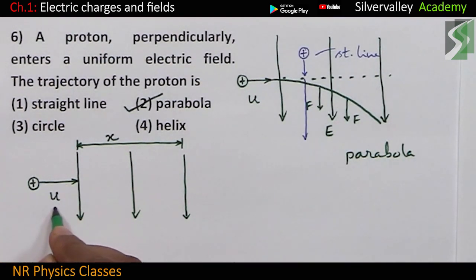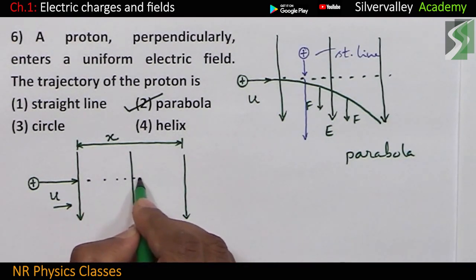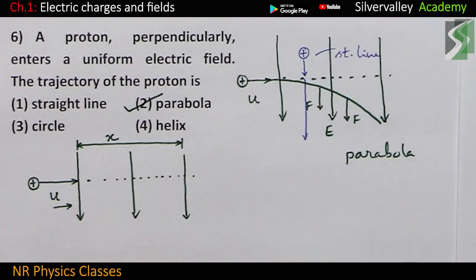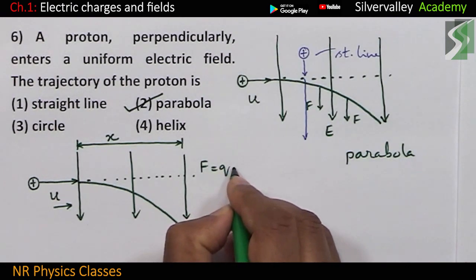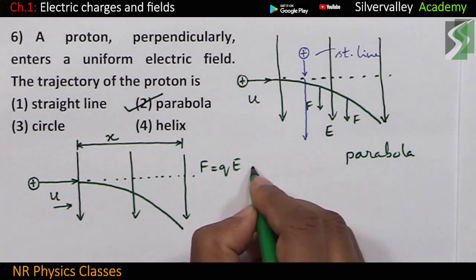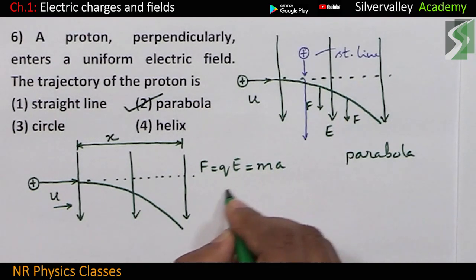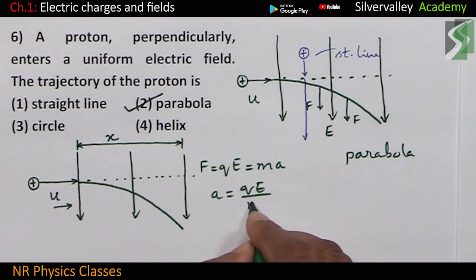So, U is initial velocity in this direction. This is the initial direction. Because of force in the direction of electric field, it is deflected like this. So, force on a charge in electric field is Q into E which is equal to M into A. Therefore, A is QE by M. So, we got expression for acceleration.